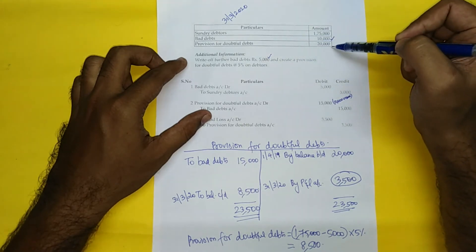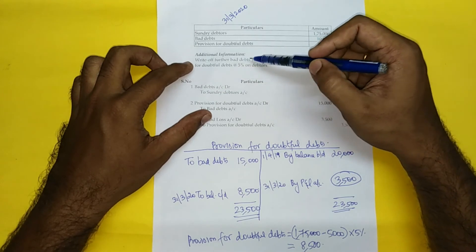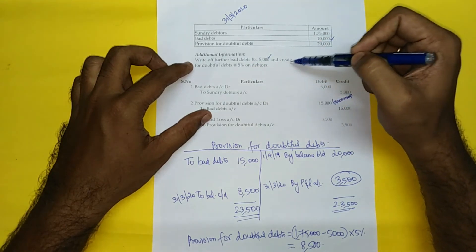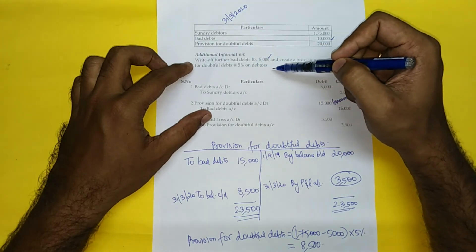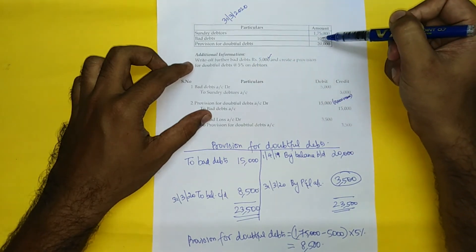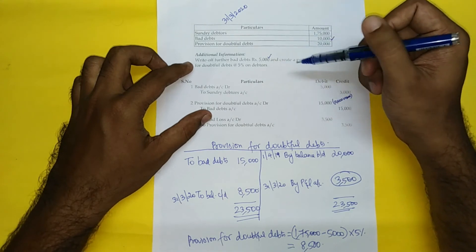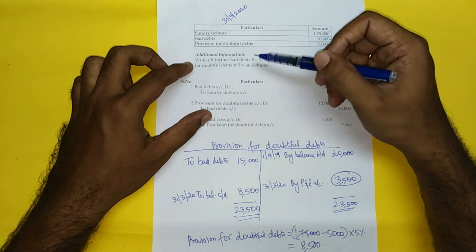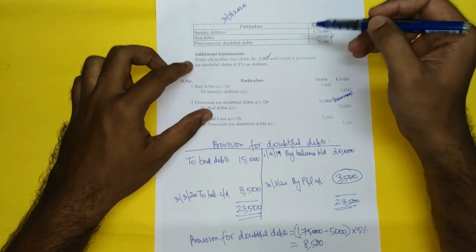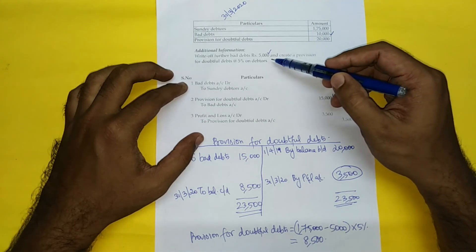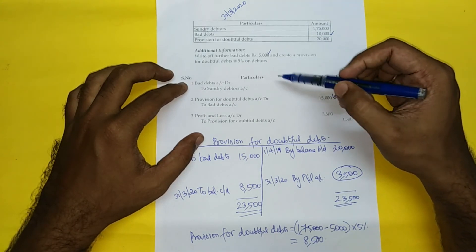The additional information says: Write off further bad debts of ₹5,000, and create a provision for doubtful debts at 5% on debtors. For the further bad debts of ₹5,000, we will pass a journal entry. The journal entry for the further bad debts is: Bad Debts Account Dr. ₹5,000, To Sundry Debtors Account ₹5,000.